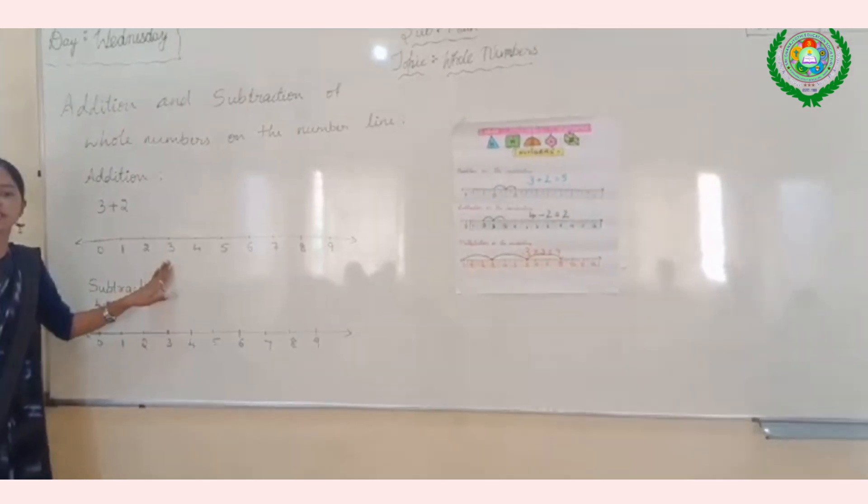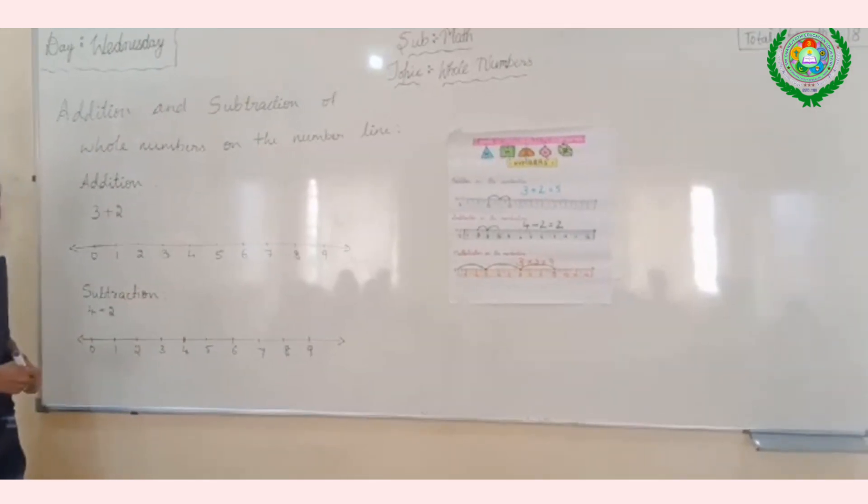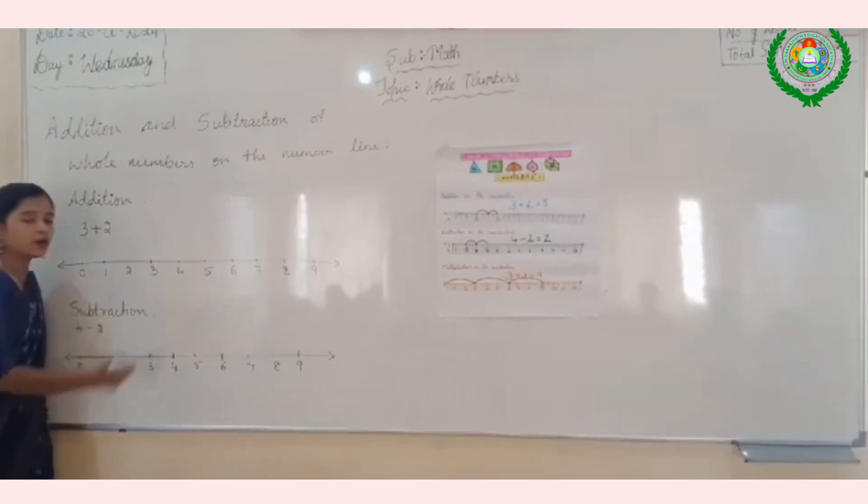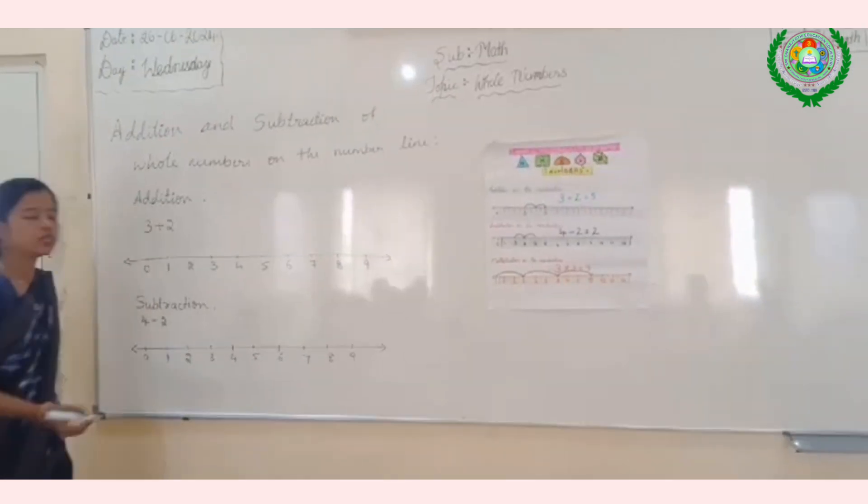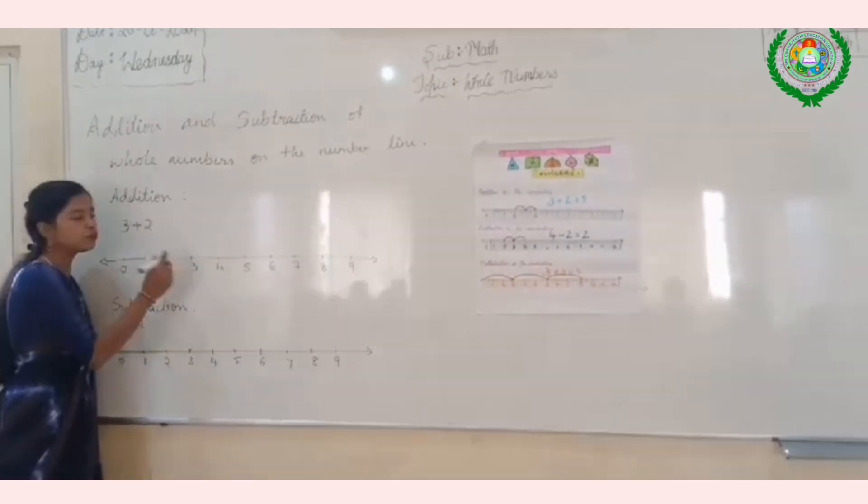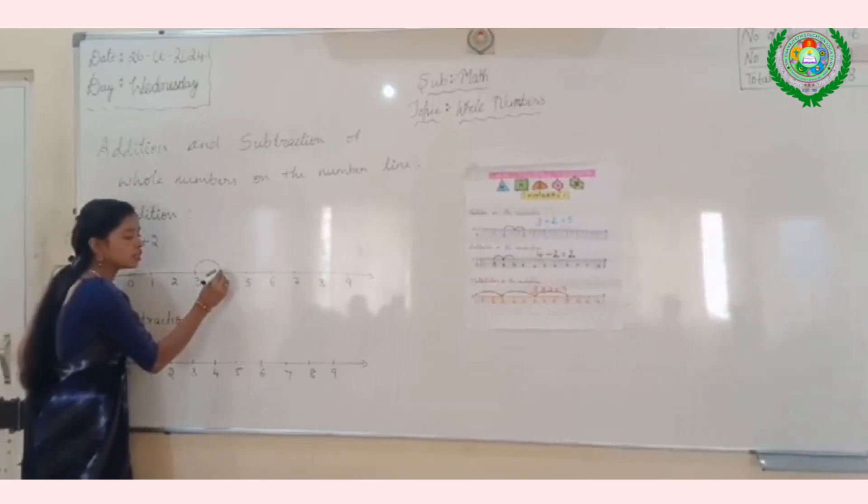First, we have to take the first number where we have to start. To add the numbers, we have to move towards the right side on the number line. Let us add number 2. We have to move two numbers on the right side.